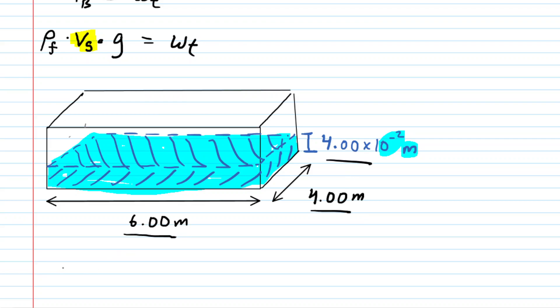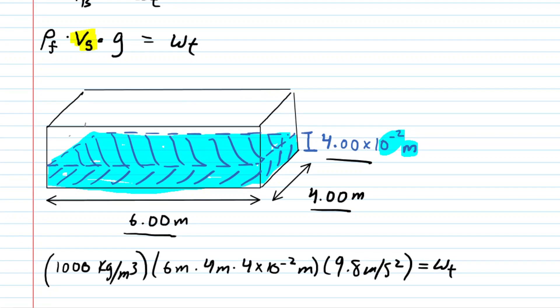For the density of the fluid, that would be the density of water, so a thousand kilograms per meter cubed. And then for the volume of the submerged portion of the boat, you simply do the length multiplied by the width, and then multiplied by the depth of water, or the depth at which the boat sank. And then g is just 9.8 meters per second squared. So we can just pick up our calculator now and multiply everything on the left-hand side. And when we do that, we get approximately, or exactly I should say, 9,408 newtons.